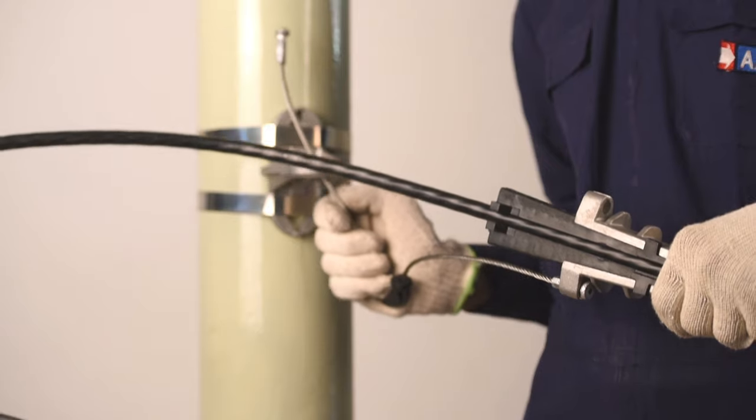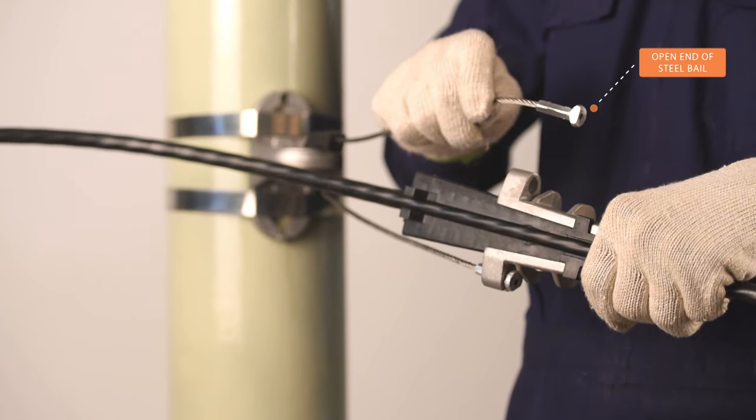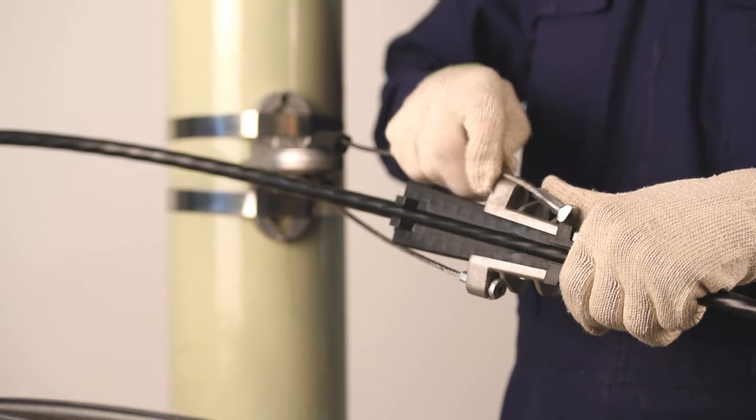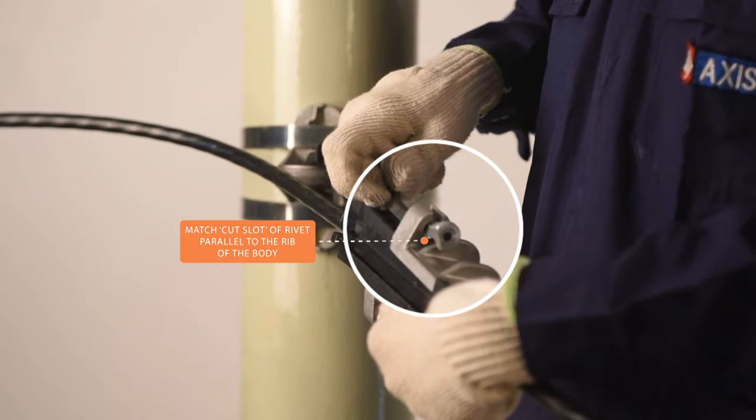Pass the open end of the bale from the bracket eye. Insert the open end of steel bale into the gap of the body. Twist the bale to adjust the cut slot on rivet to match parallel with the rib of body for easy insertion.